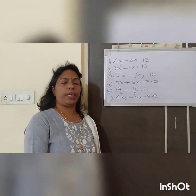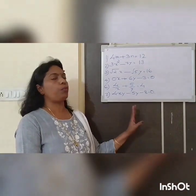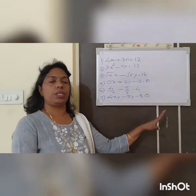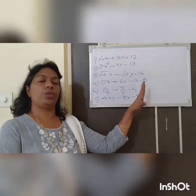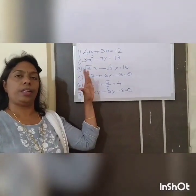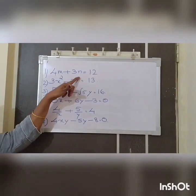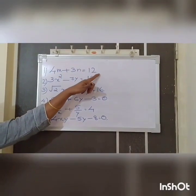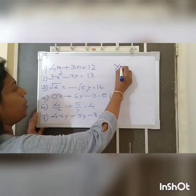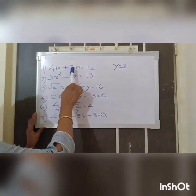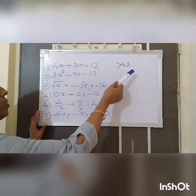Please turn to page number 1 in your textbook and complete the following table. Some equations are given; we have to identify which of the following are linear equations. The first one: 4M plus 3N equals 12. This is a linear equation in two variables. The reason is M and N are the variables and the degree of M and N is 1.